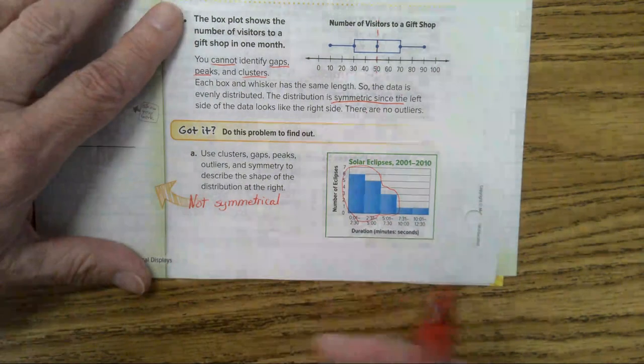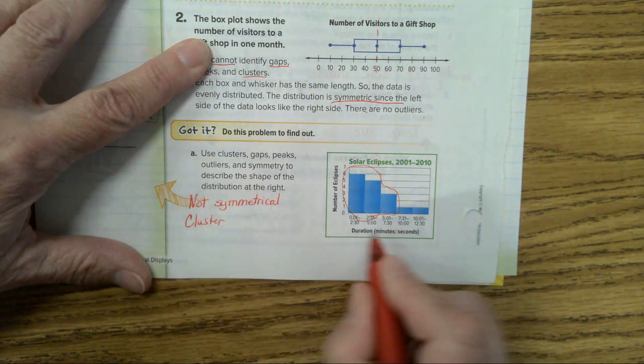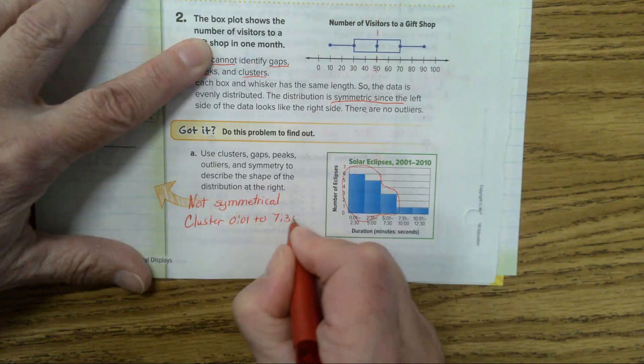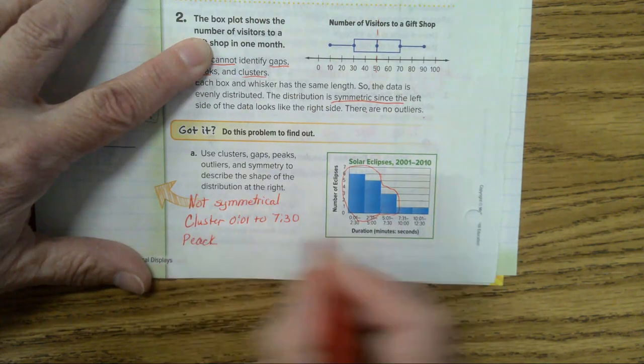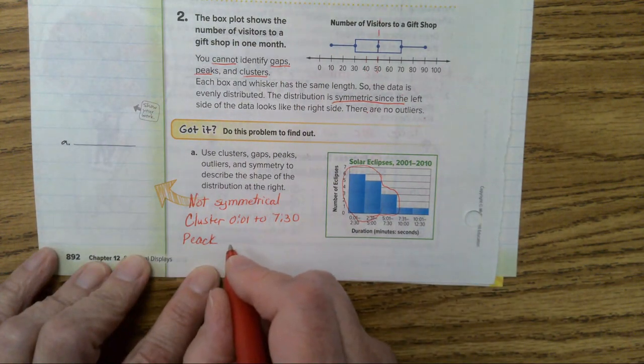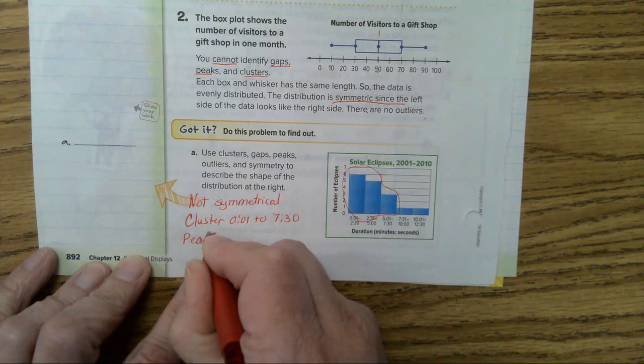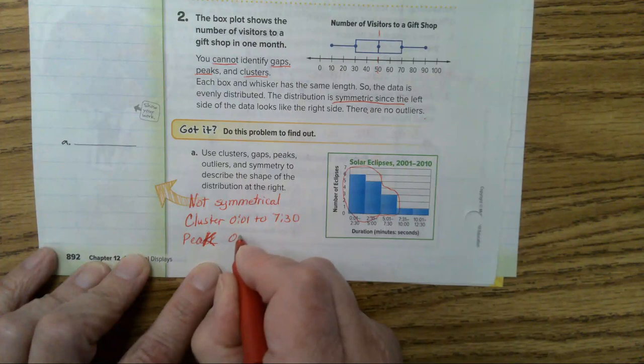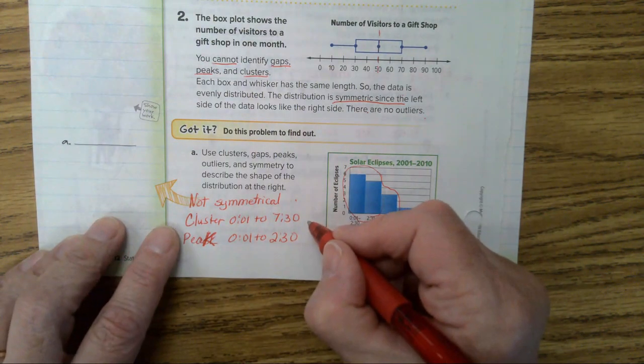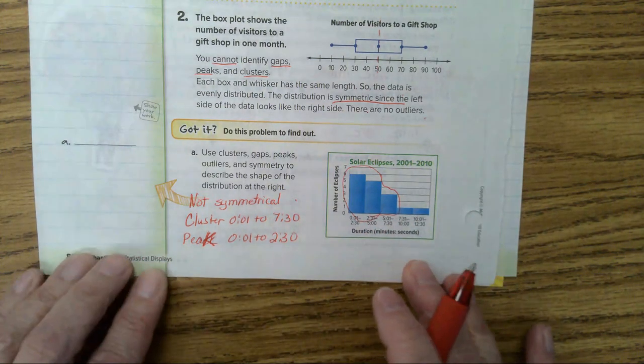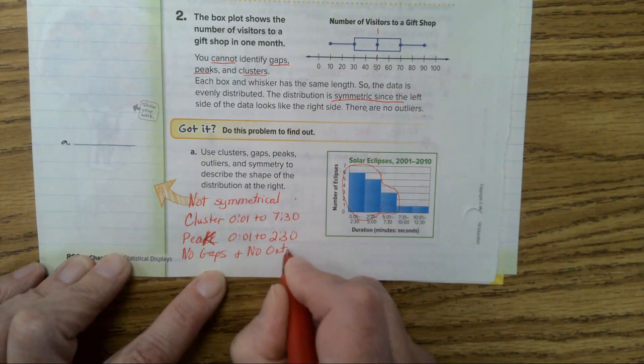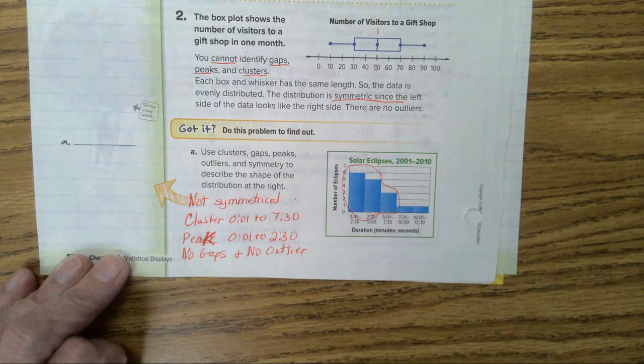There is a peak. What's the peak, kids? The peak time, it's on the left side. It's from this. The peak is 01 to 2.30. It's not symmetrical. Cluster peak. There are no gaps and no outlier. No gaps and no outlier. So we answered all of the questions there. Any questions?